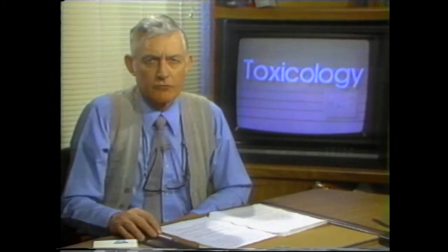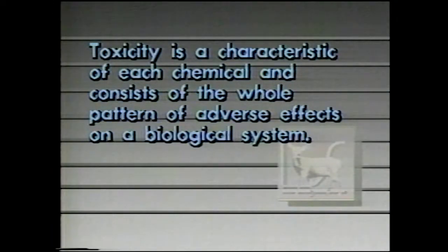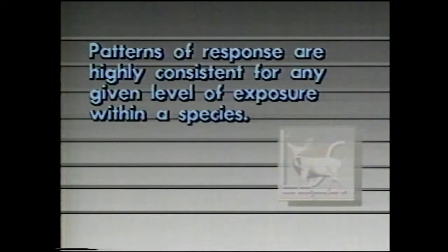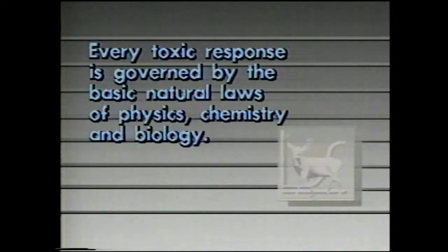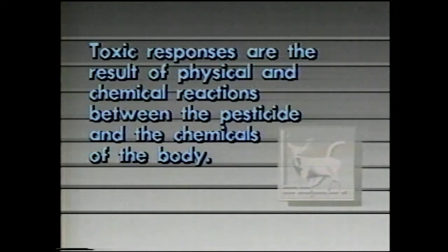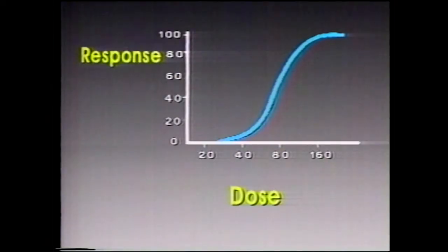Now let's review some key points about toxicology. Toxicity is a characteristic of each chemical and consists of the whole pattern of adverse effects on a biological system. The patterns of response are highly consistent for any given level of exposure within a species, as demonstrated in the dose-response relationship. Every toxic response is governed by the basic natural laws of physics, chemistry, and biology, and these responses are the result of physical and chemical reactions between the pesticide and certain chemicals that carry out the functions of the body. Every interaction of a chemical with a biological system follows an orderly dose-response relationship.